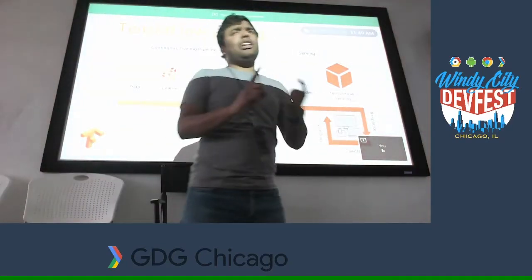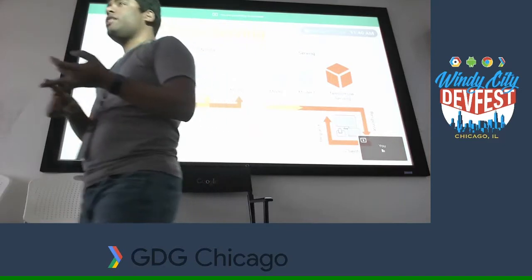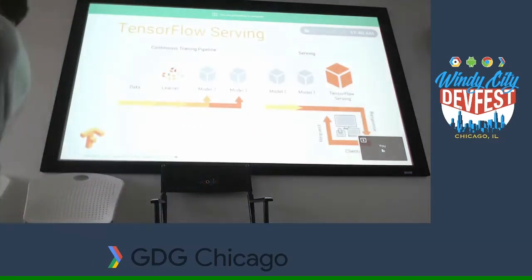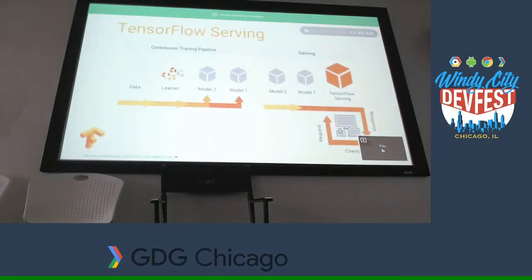Right now TensorFlow Serving provides HTTP APIs and gRPC APIs. There is good demand around GraphQL as well, so hopefully that gets supported too.